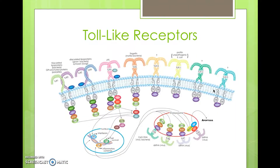Toll-like receptors are transmembrane proteins which are a part of the innate immune system that serve to recognize pathogenic molecules and activate pathways to stimulate a defensive immune response. Here pictured is the membrane in blue and white, which the toll-like receptors are a part of, making them transmembrane proteins.